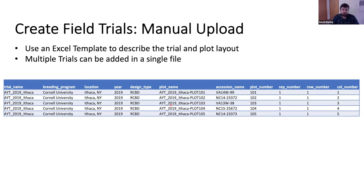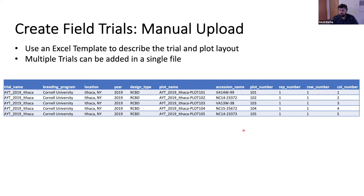Here I have a subsample of what the Excel template looks like for adding your own field trials to the database. Each row in the Excel template is a plot. You have trial-level information on the left columns and plot-level information on the right columns — trial name, location, design type, a unique plot name, the accession name, plot number, and field position with row and column numbers. Once you have this template filled out, you upload it to the website and it will create the trials for you. You can have multiple trials in a single file, so uploading one file creates all those trials at once.